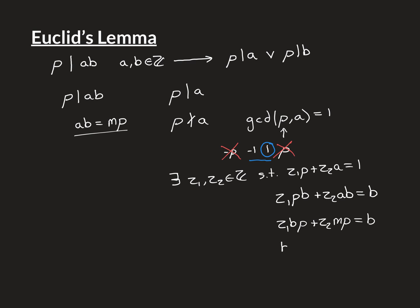And now, I'll just factor out that P by distributivity, and I'm swapping the equation around, so I'm bringing B over here, you know, swapping left and right. So B is equal to Z1 times B plus Z2 times M, all of that multiplied by P.